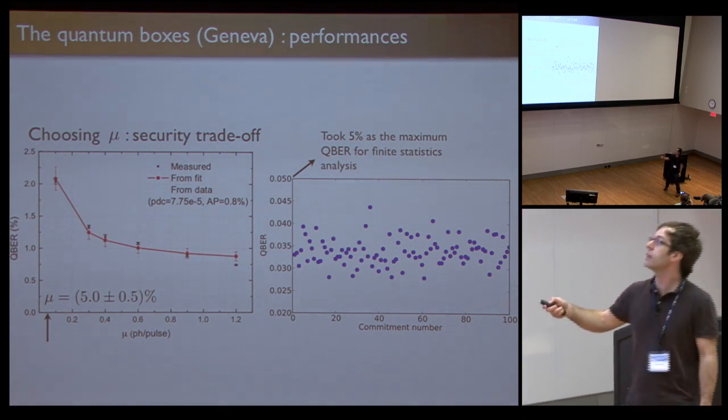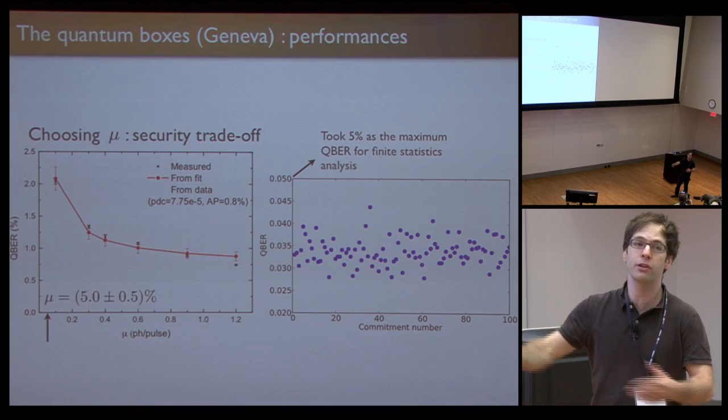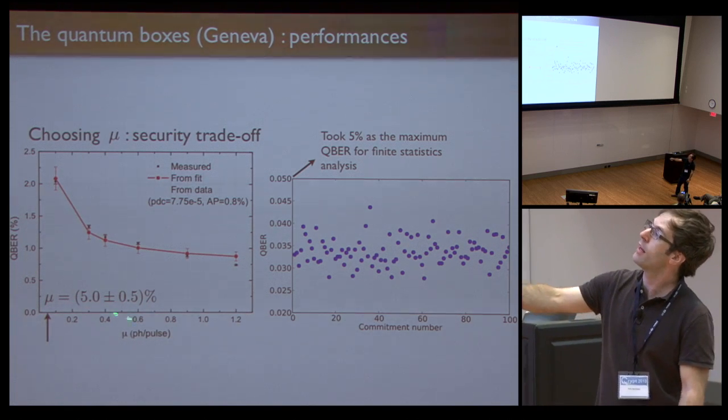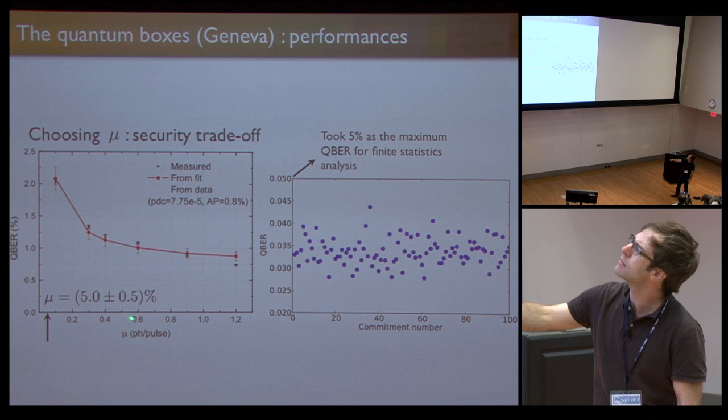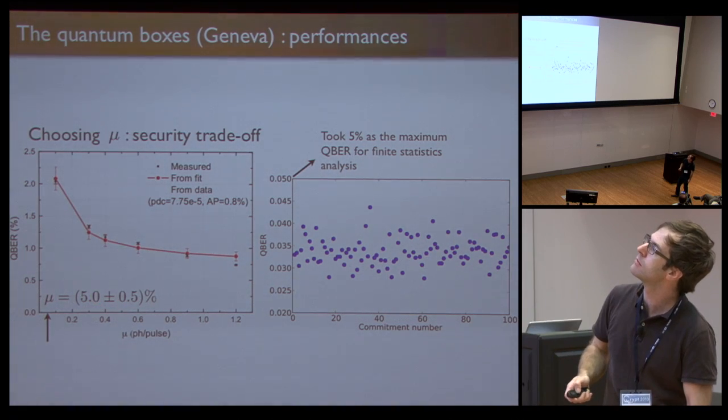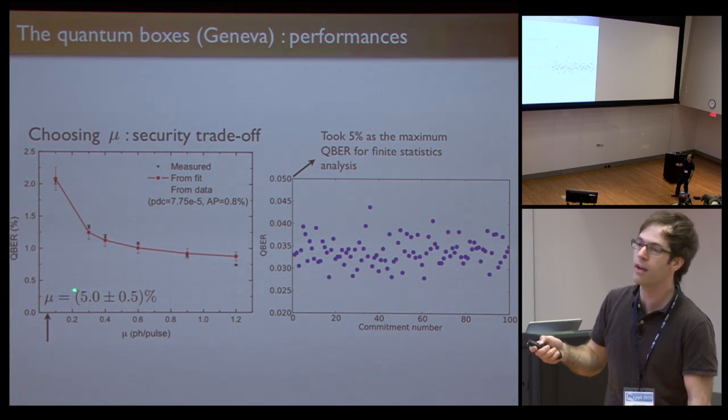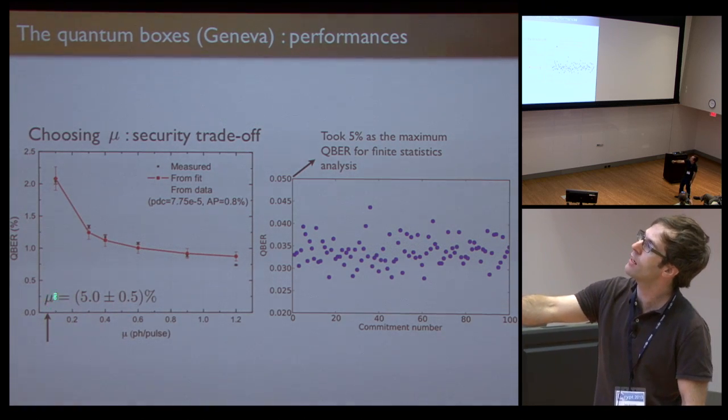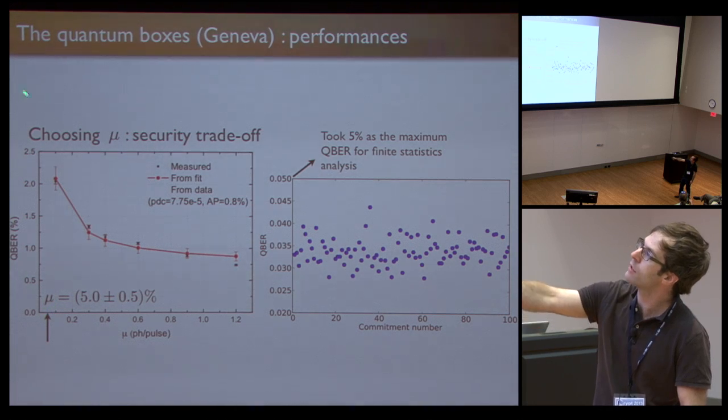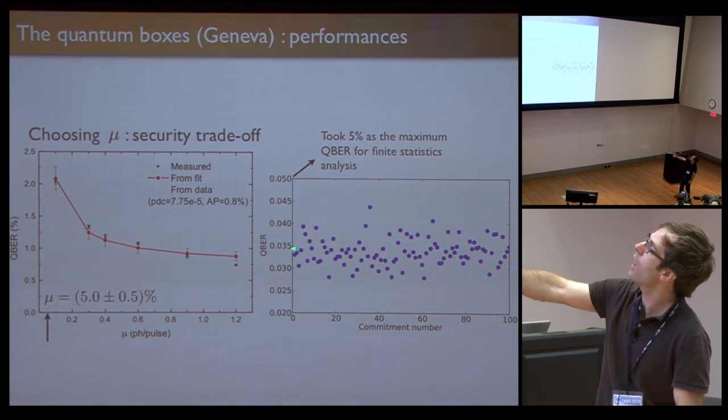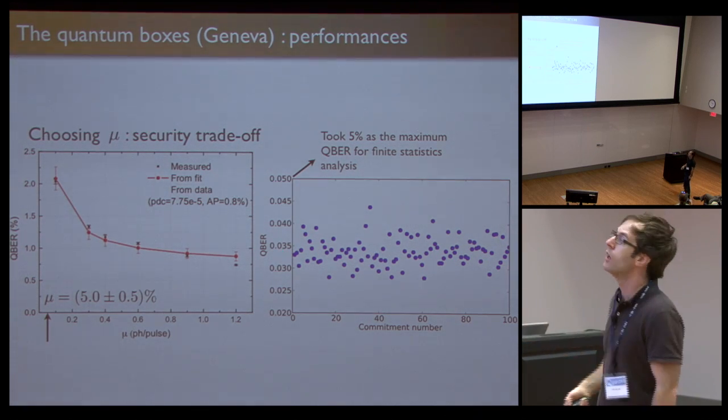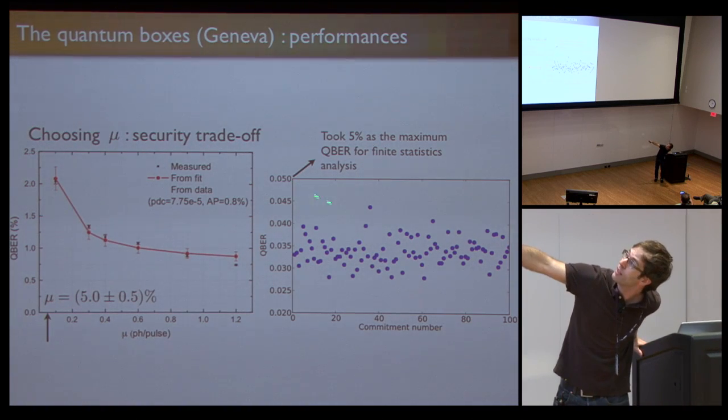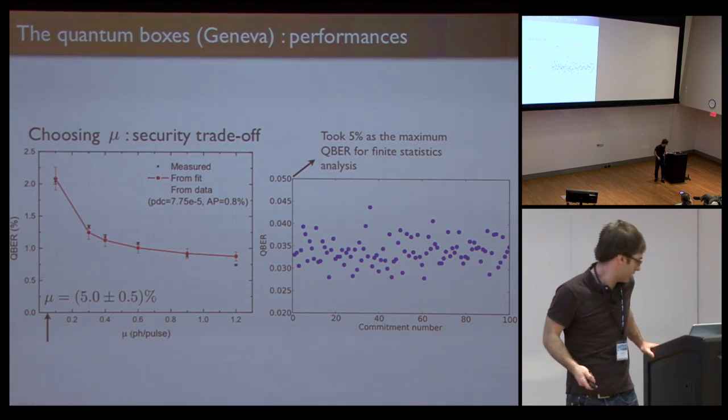In terms of quality, you have to choose the mean number of photons properly so that it's not too high but not too low. If it's too high, it's insecure because of multi-photons. If it's too low, signal-to-noise ratio is too low. We operated at 5 percent—I think it's 5 percent. That was giving us a QBER that's actually sitting right here. We did 100 commitments, and that's the distribution of the QBER we observed for each of these commitments involving the detection of 7,000 pulses. It's never more than 5 percent. There are some fluctuations, so that's actually the cutoff that we use for the final statistics analysis.